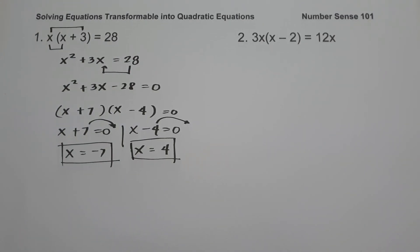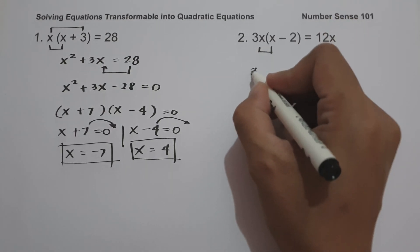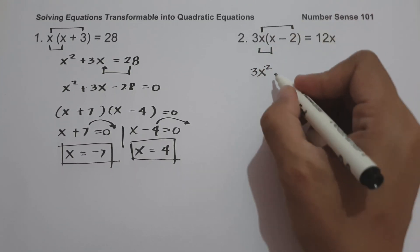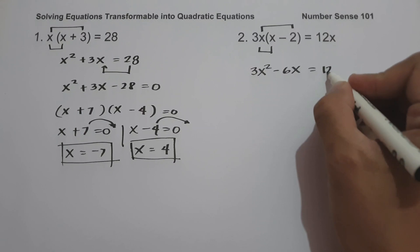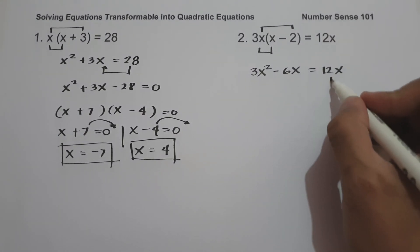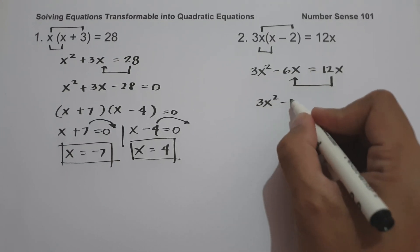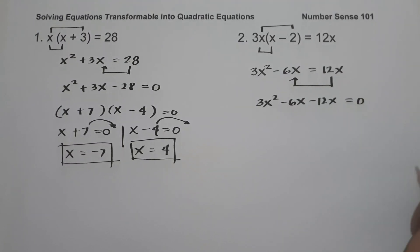On number 2, we have 3x times the quantity x minus 2 equals 12x. Just like example number 1, let us multiply: 3x times x is 3x squared, and 3x times negative 2 is negative 6x, equals 12x. Moving 12x to the other side gives us 3x squared minus 6x minus 12x equals 0.